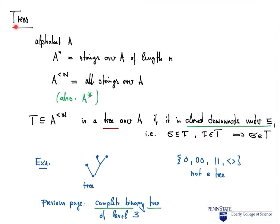Some notation: working with alphabet A, A^n denotes all strings over A of length n. A^{<n} denotes the set of all strings over A of length less than n. In computer science and formal language theory, the symbol A* is often used to denote the set of all finite strings over A.